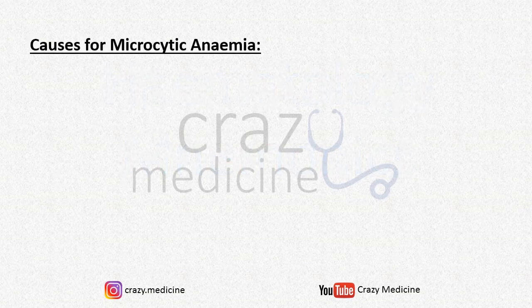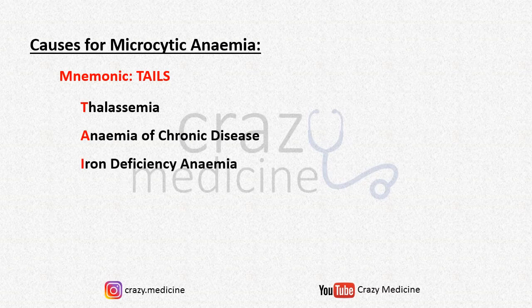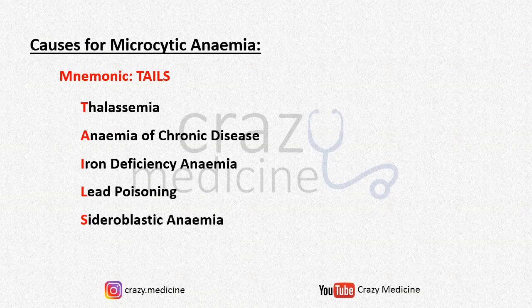First is causes for microcytic anemia. The mnemonic is TAILS. T stands for thalassemia, A for anemia of chronic disease, I for iron deficiency anemia, L for lead poisoning, and S for sideroblastic anemia.